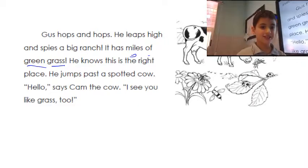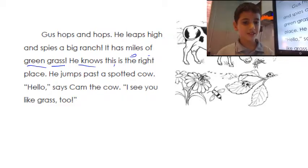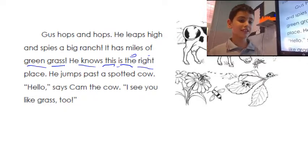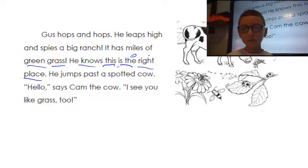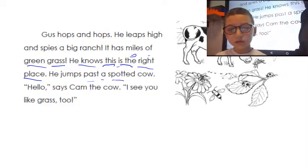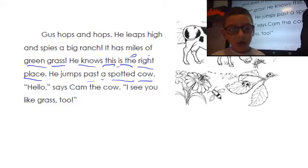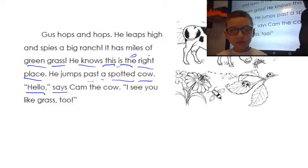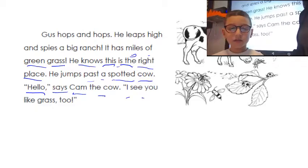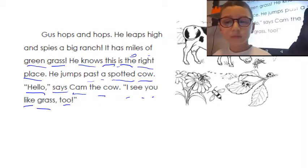Mahdi, excuse me, Stan replies. Gus, there are too many insects here. Gus pops off. Bravo Mahdi. Lama's turn. Gus hops and hops. He leaps high and finds a big ranch. It has long vines, miles of green grass. Bravo. Rida, can you read loudly? This is the right place. Bravo. Ali Burji, are you ready to continue? He jumps past a spotted cow. Hello, says Cam the cow. I see you like grass too. Bravo, amazing.